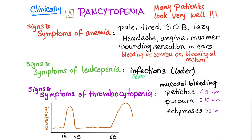Symptoms and signs — first, symptoms and signs related to pancytopenia. Please note that many patients with aplastic anemia look very well. They look normal, they are laughing, life is good, everything is okay. But when you do the blood test — wow — all of their blood cells are decreased, maybe except for the lymphocytes.